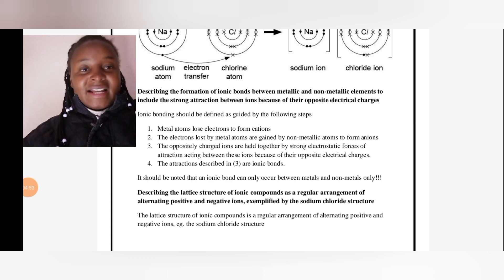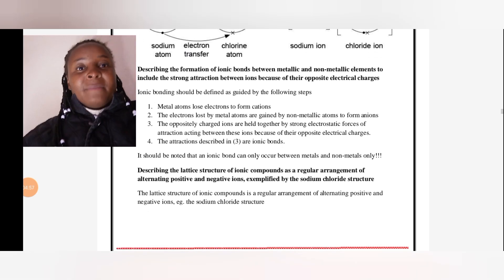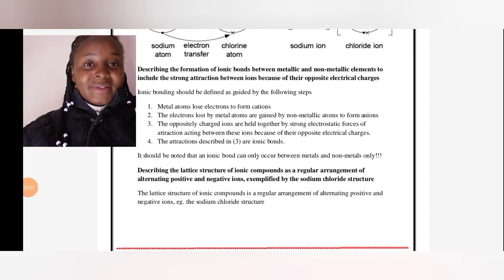The first step: metal atoms lose electrons to form cations. The electrons lost by metal ions are gained by non-metallic atoms to form anions.